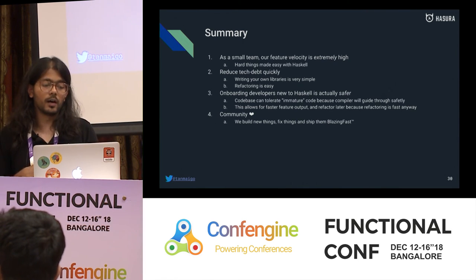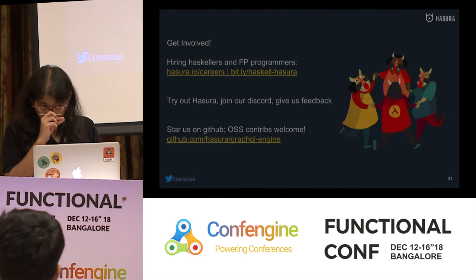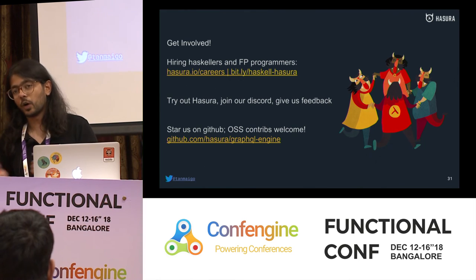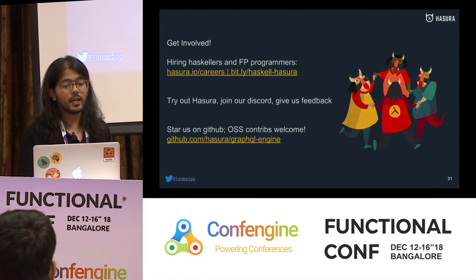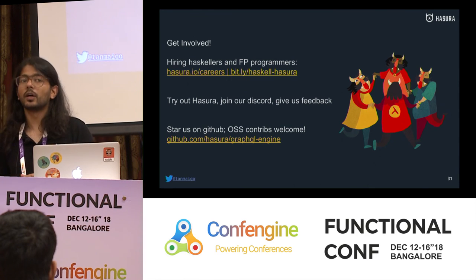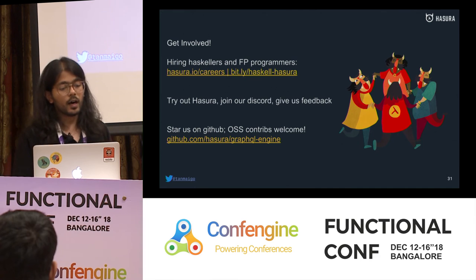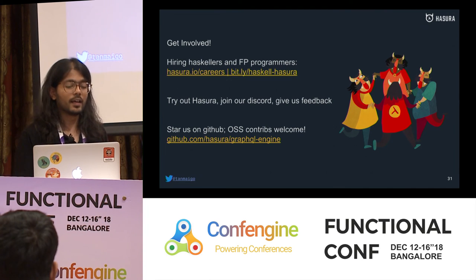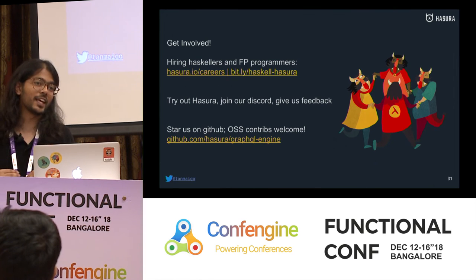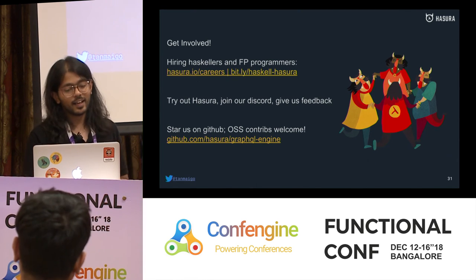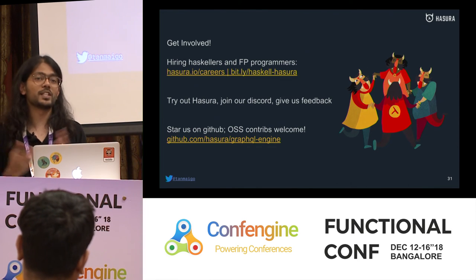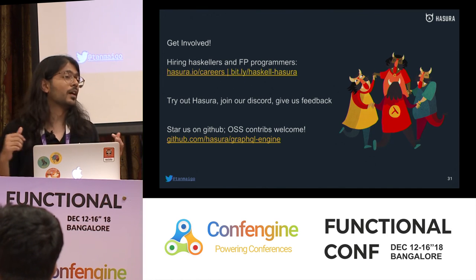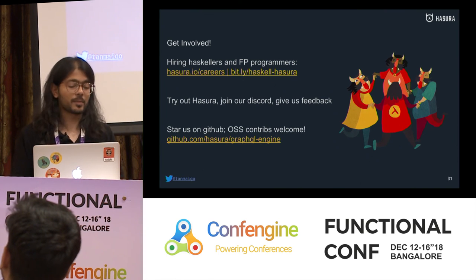To wrap up: a few ways you can get involved. We're hiring Haskellers and FP programmers — head to hasura.io/careers or the bit.ly link for remote roles and roles in Bangalore. Please try Hasura out, join our Discord, give us feedback, use it in a side project. Stars on GitHub mean a lot to us. OSS contributions are welcome, especially in Haskell — we're very beginner friendly with many issues tagged for beginners. If you're doing React, JavaScript, Go, or Haskell, head to the repo and help us fix some things.